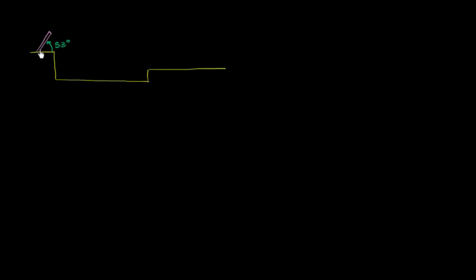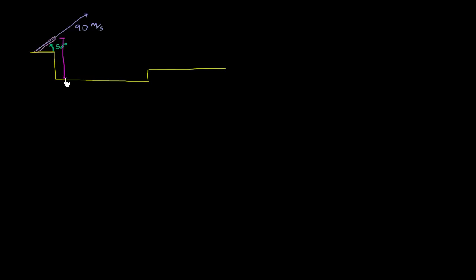It's coming out of the cannon, and just to make it 100% clear, this angle right over here is 53 degrees. We are going to have it come out of the muzzle of the cannon with a velocity of 90 meters per second. And to give ourselves a sense of the heights — from the muzzle of the cannon down to the ground, this height right over here, let's say that is 25 meters.